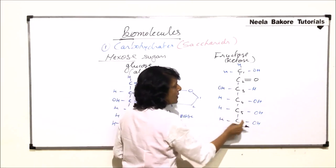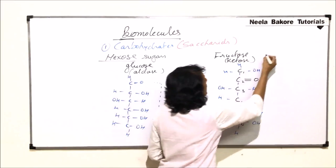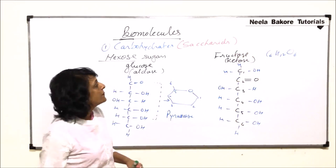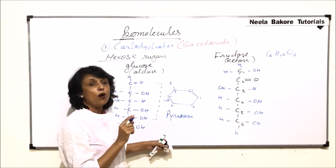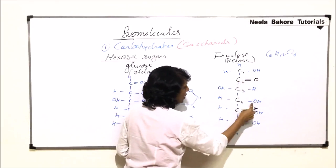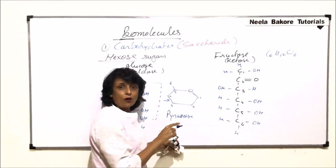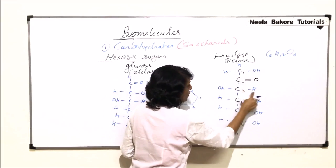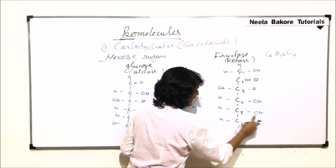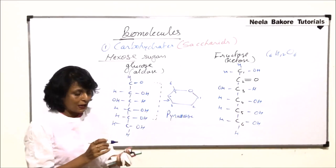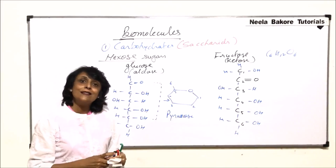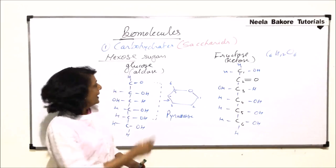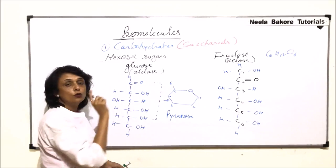Fructose is also C6H12O6, the same as glucose, because both are hexose sugars. Counting confirms six carbons, twelve hydrogens, and six oxygens. However, the functional group differs: in glucose it is an aldehyde group, while in fructose it is a keto group.